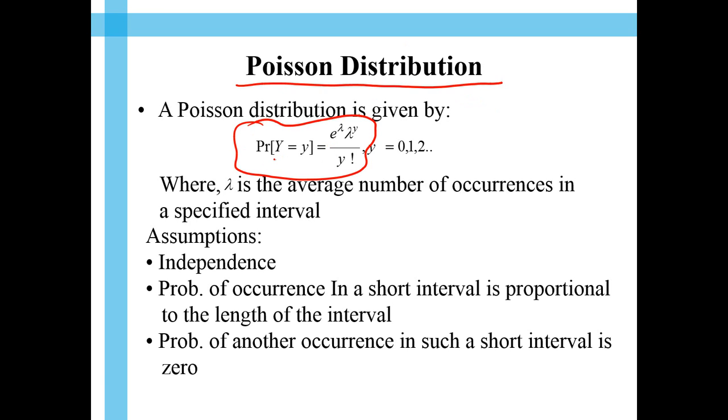So, probability of Y, which is a random variable, taking a value of small y, that's the way we write it, is given like this: e to the power negative lambda, lambda to the power y divided by y factorial. And what is lambda?